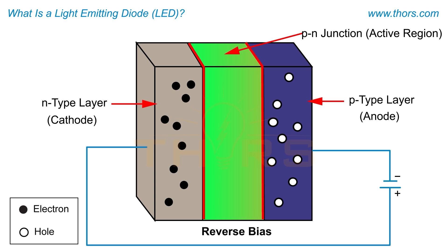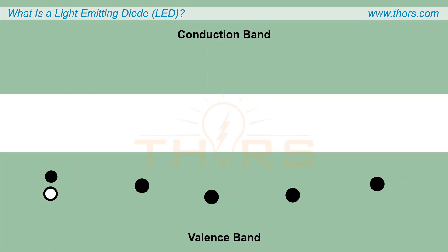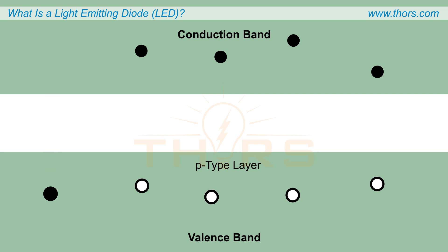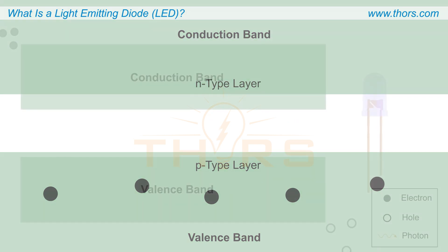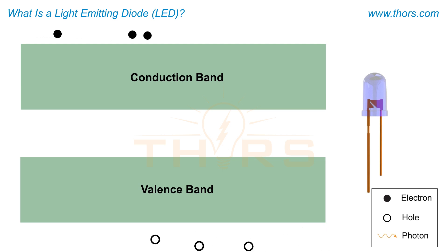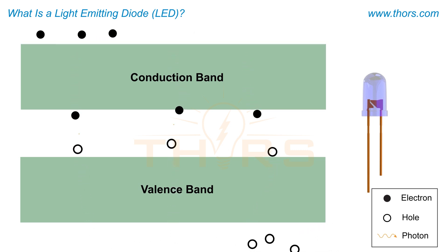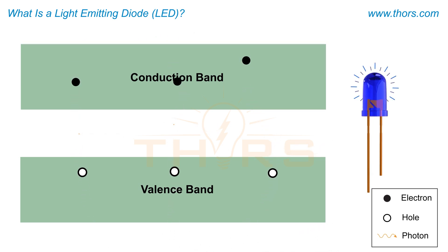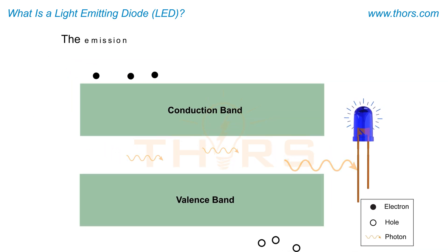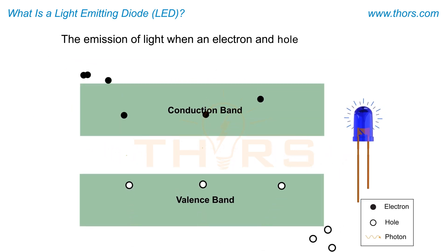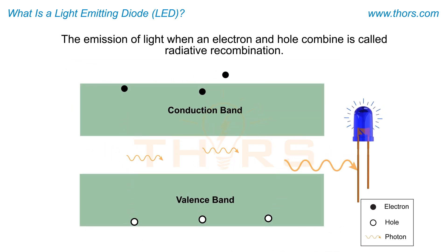The forward bias condition causes the electrons to be excited and move from the valence band, which corresponds to the P-type layer, to the conduction band, which corresponds to the N-type layer, leaving holes in the valence band. When the electrons and holes recombine in the active region, energy is released in the form of photons, or light energy. The emission of light when an electron and hole combine is called radiative recombination.